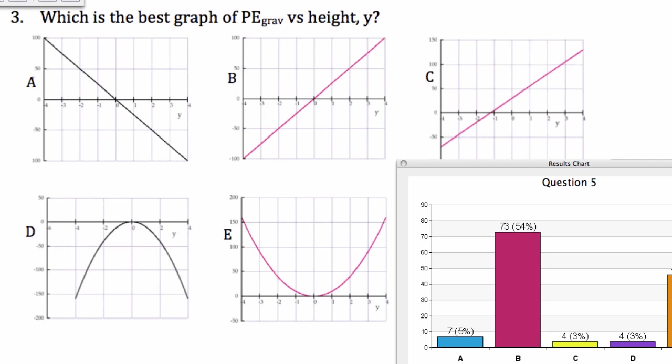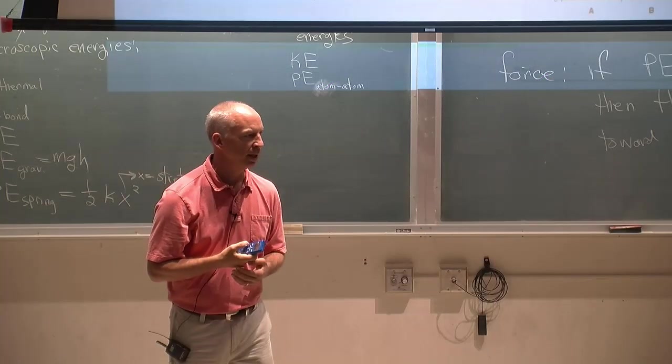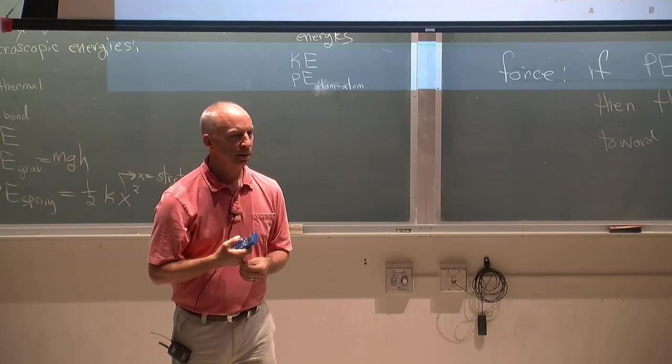The main other answer was E. And there's two problems with E. One of them is kind of physics. If you're higher than zero, the potential energy goes up. Okay, that's true. If you're lower than zero, does the gravitational potential energy go up? No.